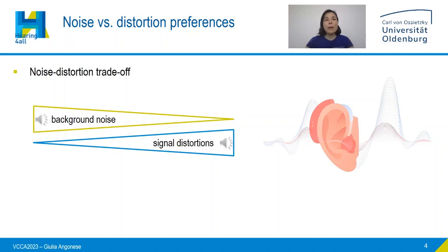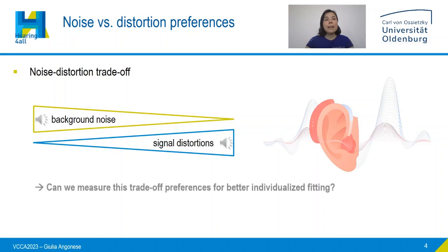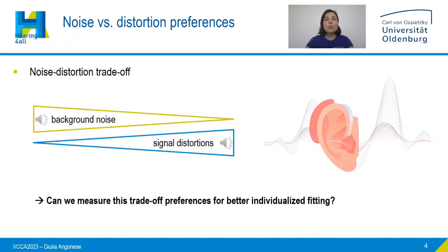Despite this drawback, however, these algorithms are an essential part of the fine tuning of hearing aids since they improve the understanding of speech in noise. So, can we measure these trade-off preferences to achieve information on the individual that will favour better individualized fitting?